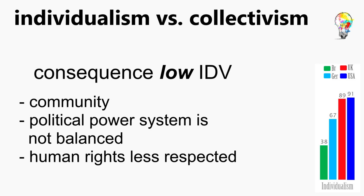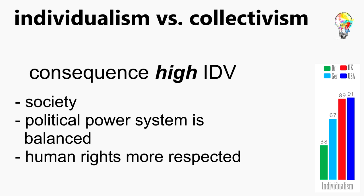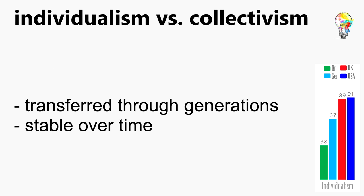Low IDV score countries live in a community-based social order. Their political power system is more unbalanced and human rights are less respected. High IDV countries live in a society-based social order, have an overall balanced political power system and human rights are more respected. Individualism is also transferred from generation to generation. The position due to comparison between countries stays the same and differences are rooted in the history of each country, so it is stable over time.